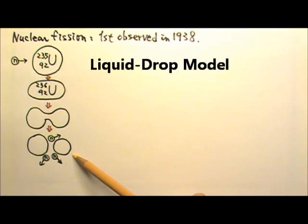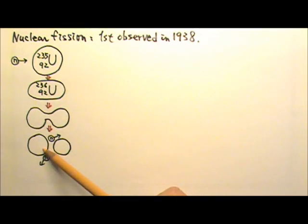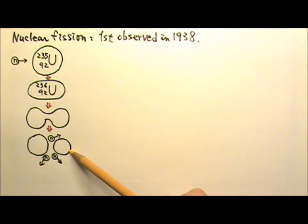This process can be explained by the liquid drop model. When a water droplet gets too big due to condensation, it tends to split into two similar-sized droplets, instead of shedding a little bit of water at a time.